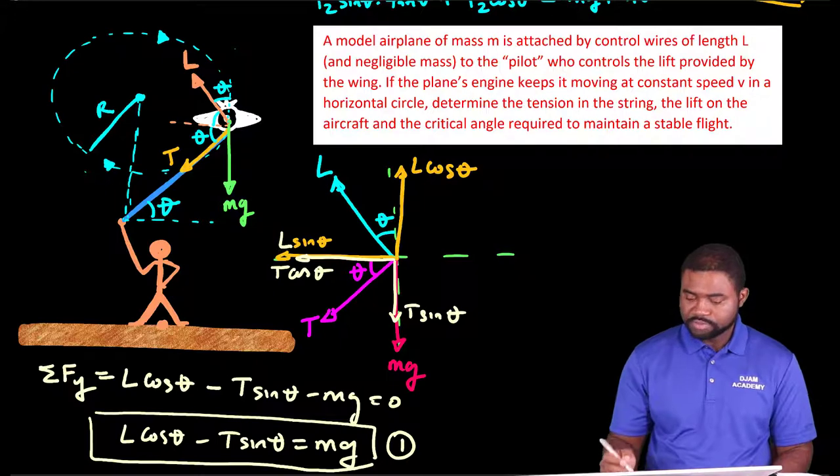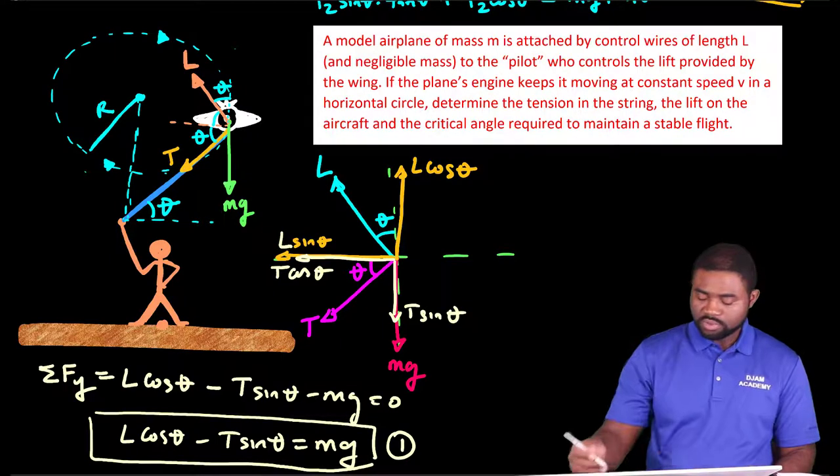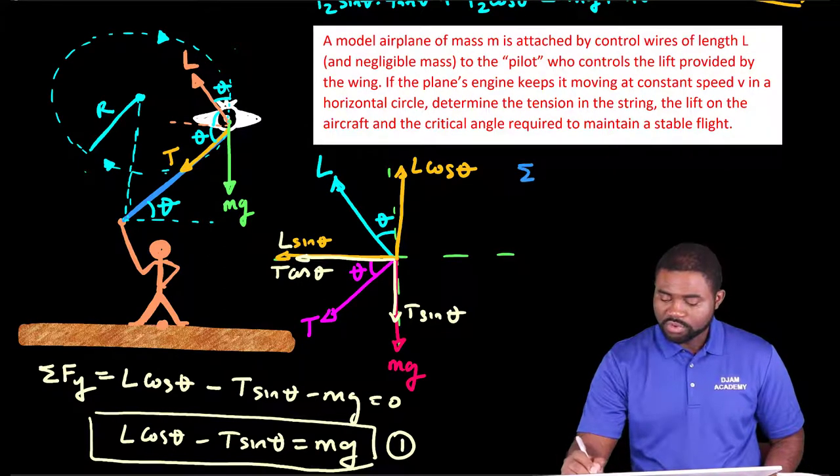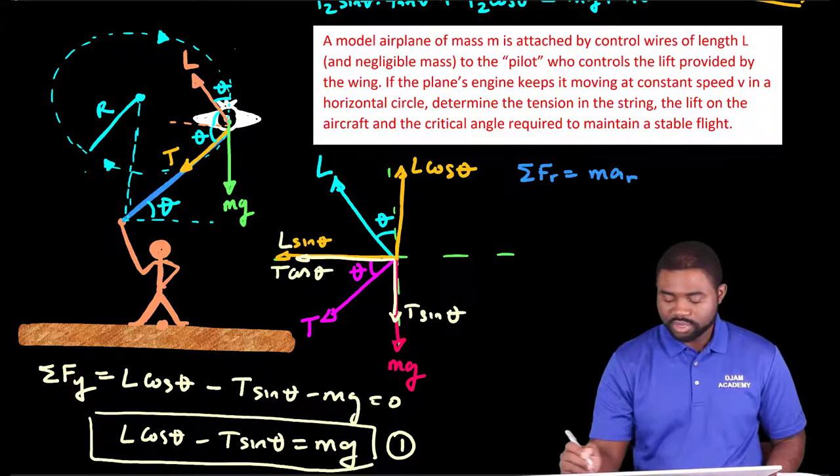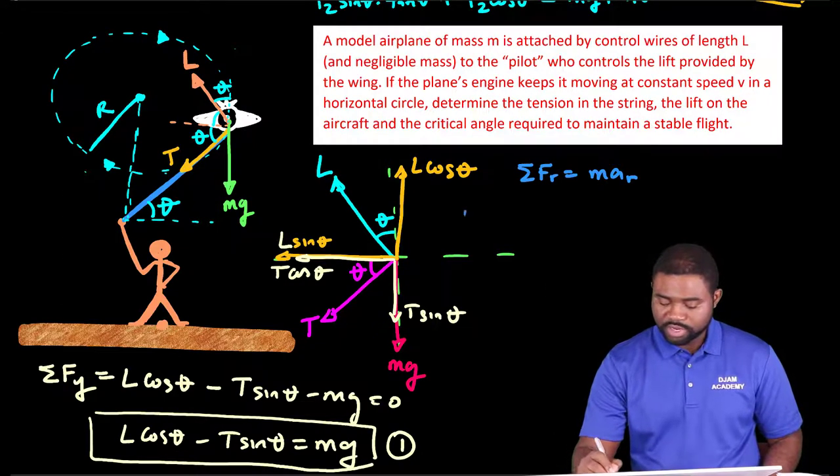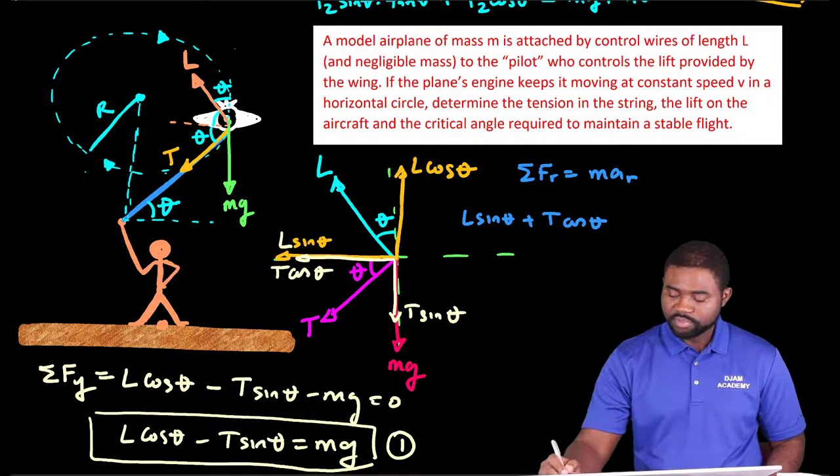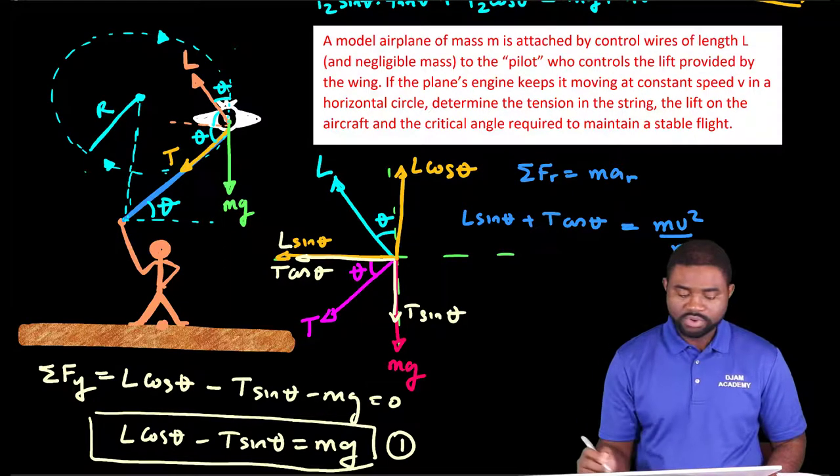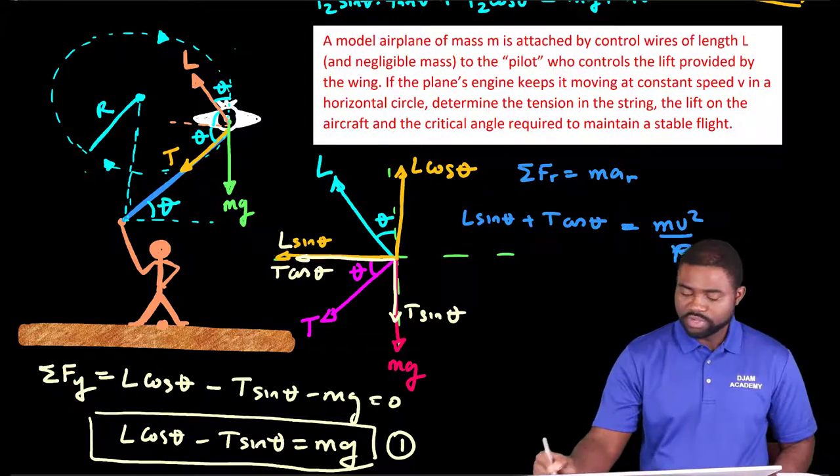We're going to use it later. So let's sum the forces along the x direction. We have the summation of FR, this will be equal to MAR. So we have here L sine theta plus T cosine theta. This must be equal to MV squared over R, where R is the radius of the circle.